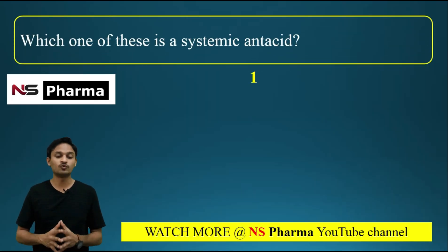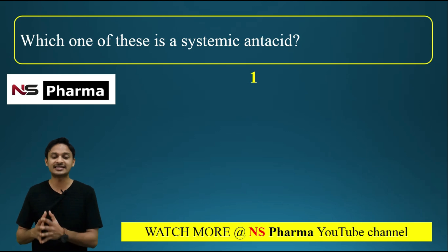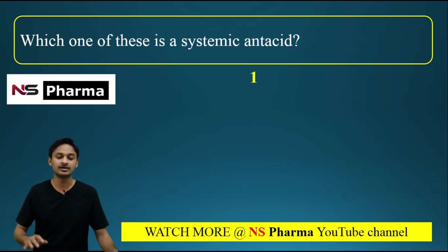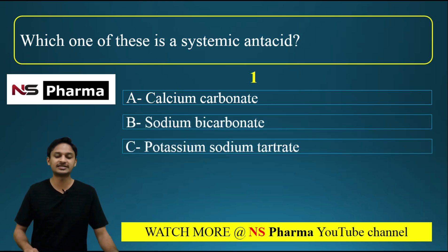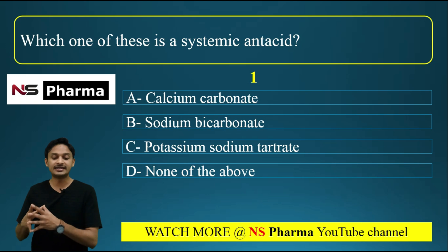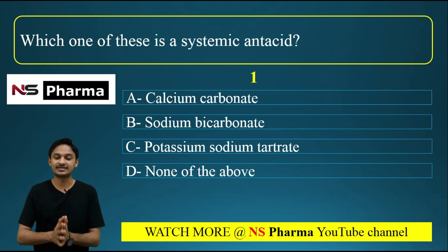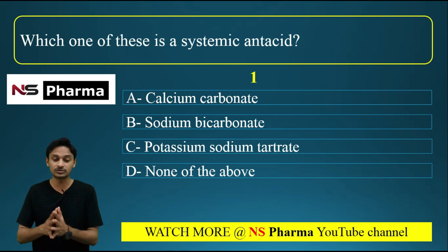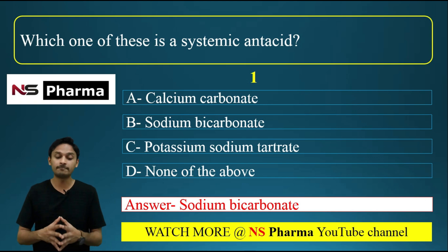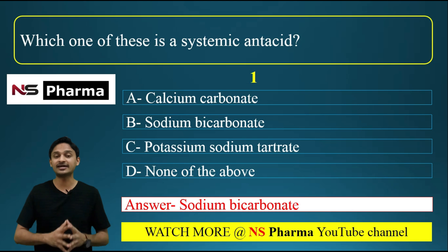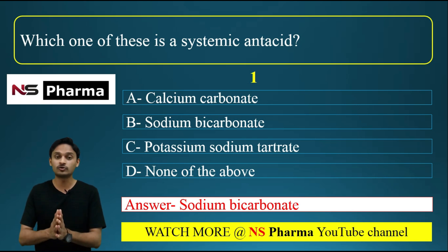The first question of this video is: which one of these is a systemic antacid? Options are: A) calcium carbonate, B) sodium bicarbonate, C) potassium sodium tartrate, D) none of the above. The correct answer is option B, that is sodium bicarbonate. Sodium bicarbonate is a good example of a systemic antacid.